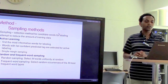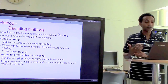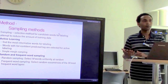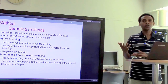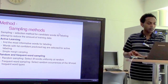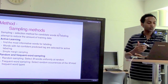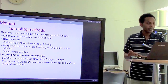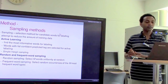The sampling methods used to select candidate words for labeling during active learning are: active learning, random sampling, and frequent word sampling. In active learning, they find the most informative word for labeling — the word with the least confidence score when tagged — using simple margin sampling. Random sampling selects M words uniformly. Frequent word sampling first selects the most frequent words and then randomly samples from those.